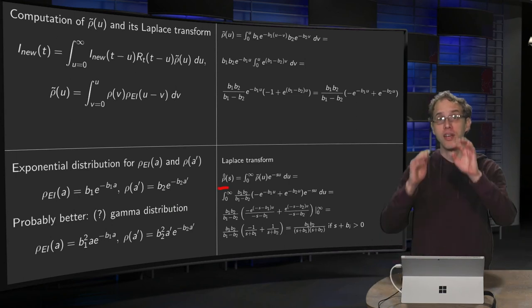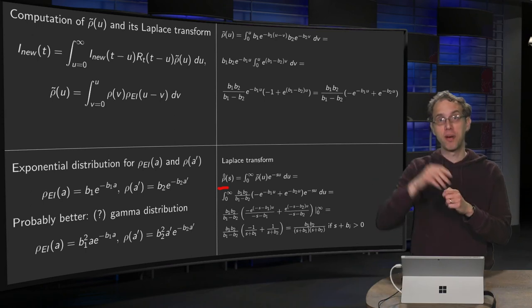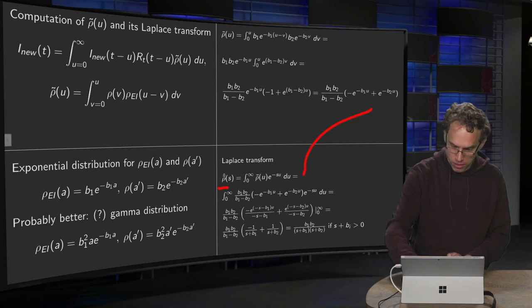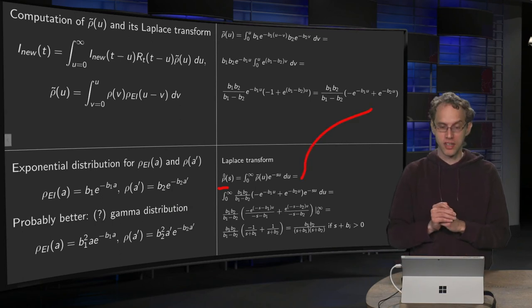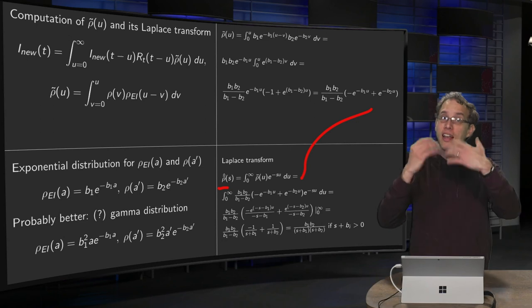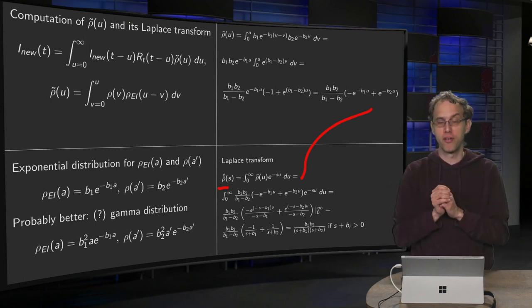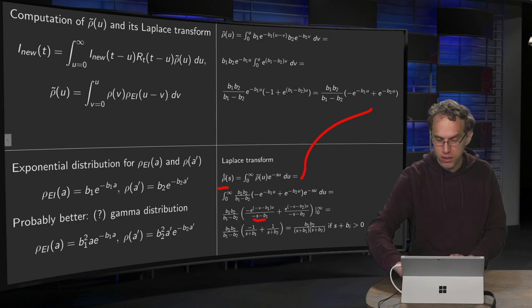So you plug in your ρ tilde, there it goes, times e to the power minus s u. And the nice part is that you have just one exponent, you can turn it into a single exponential, both of them. So there you go.